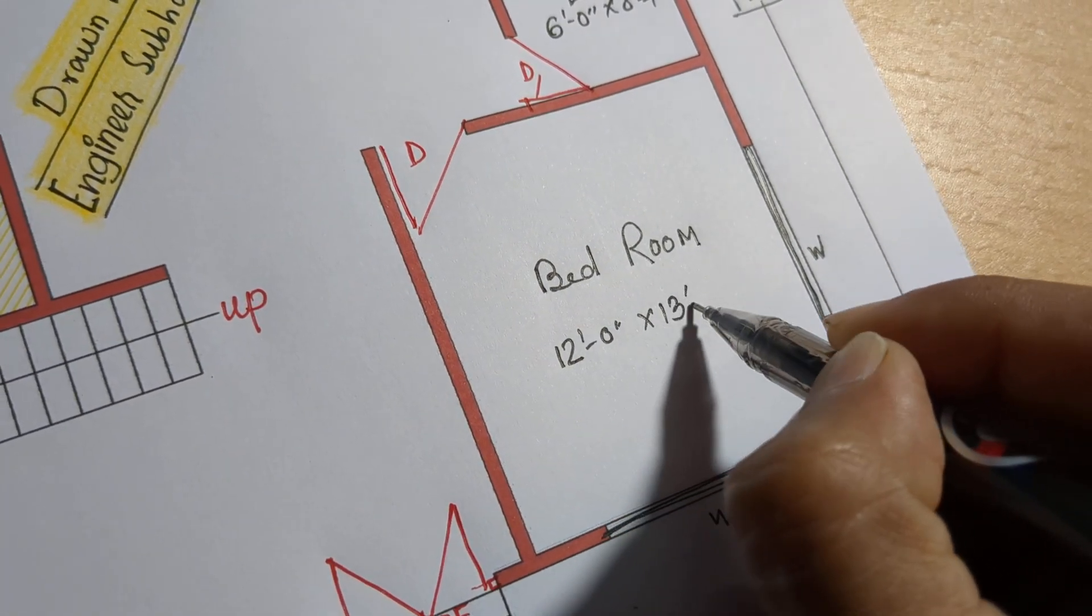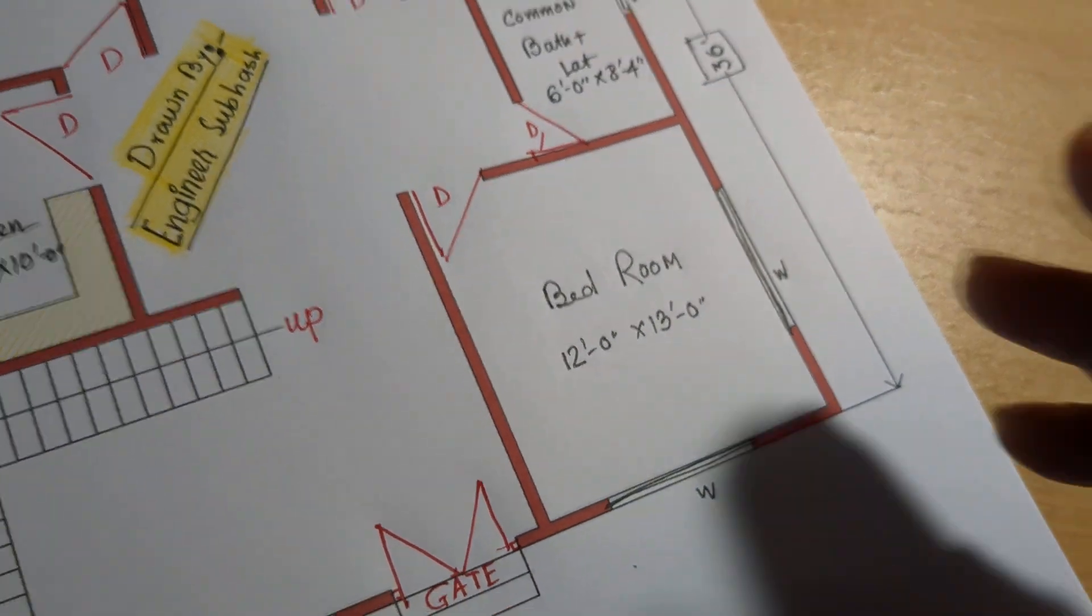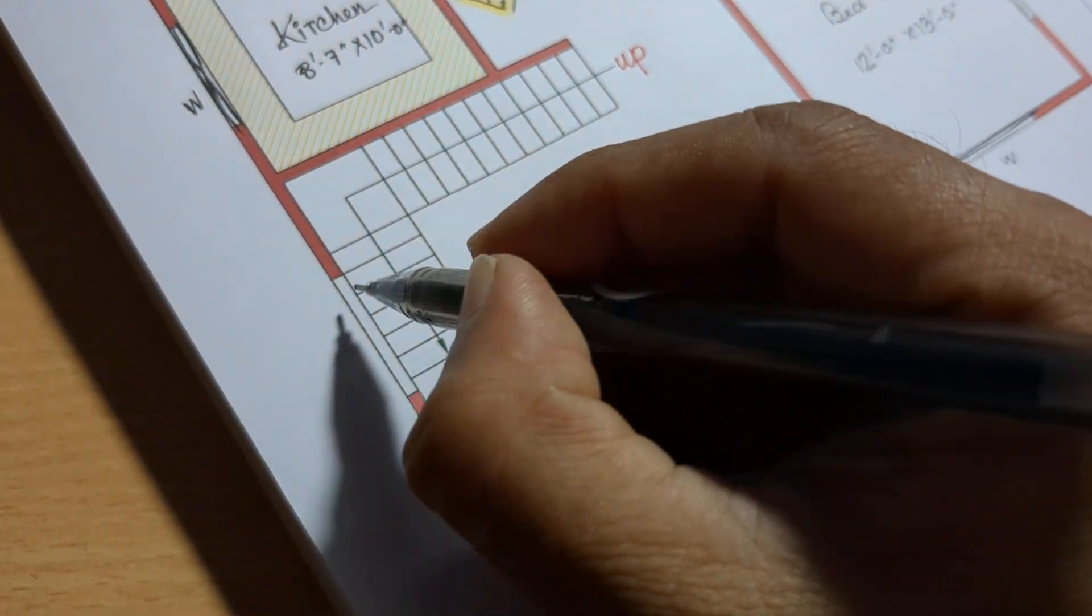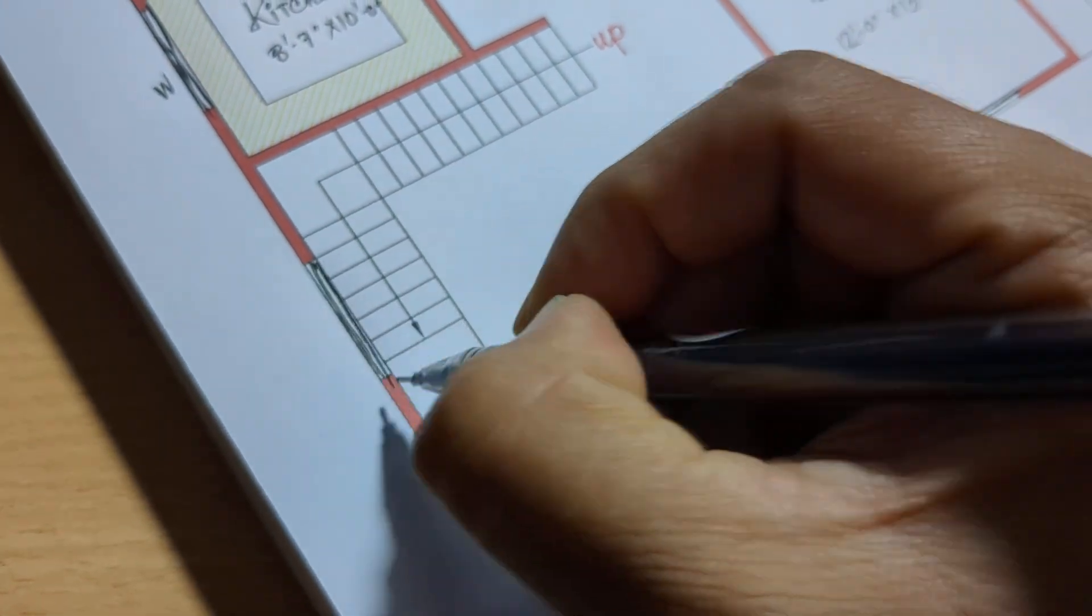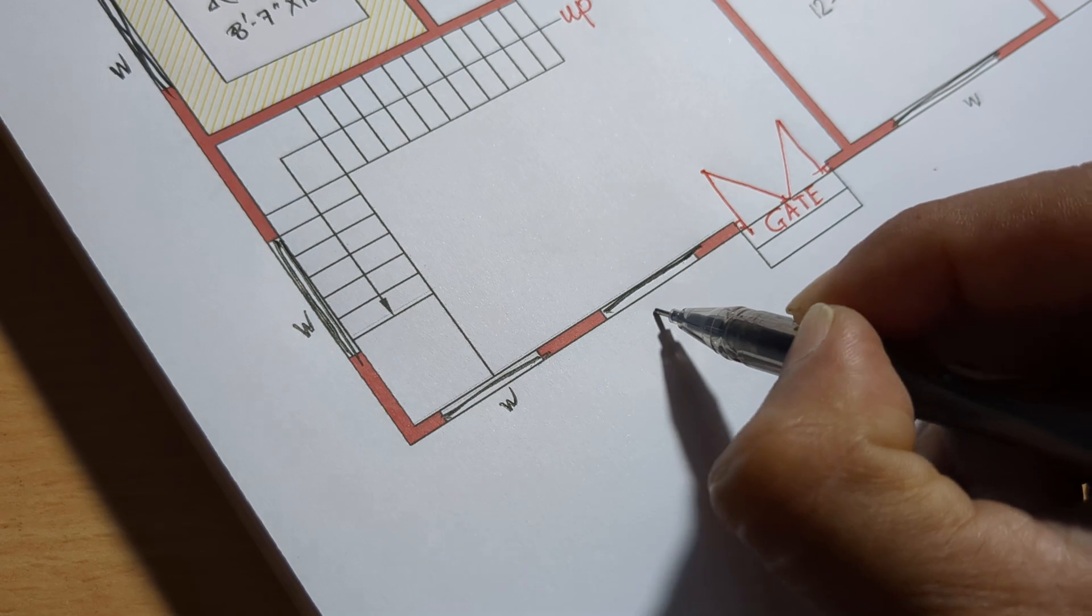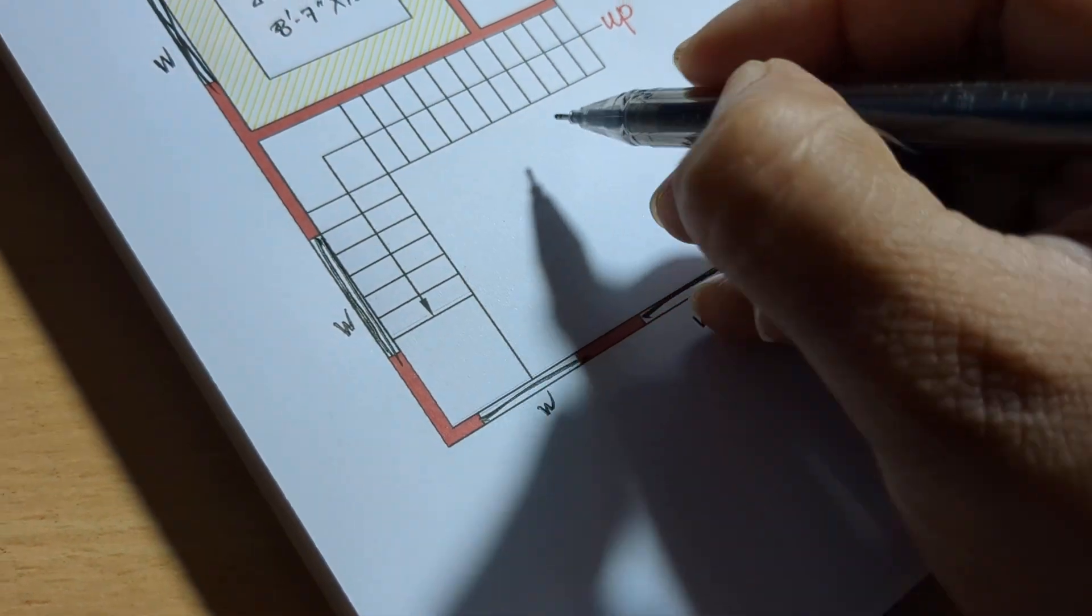Third bedroom: 12 feet 0 inch by 13 feet 0 inch. Window, front side window.